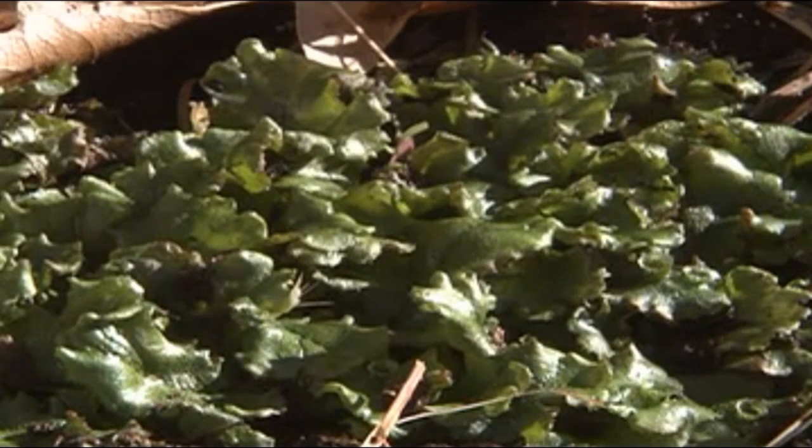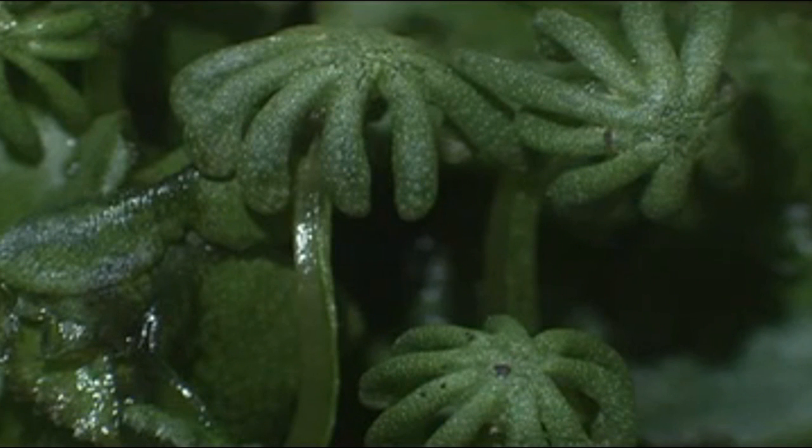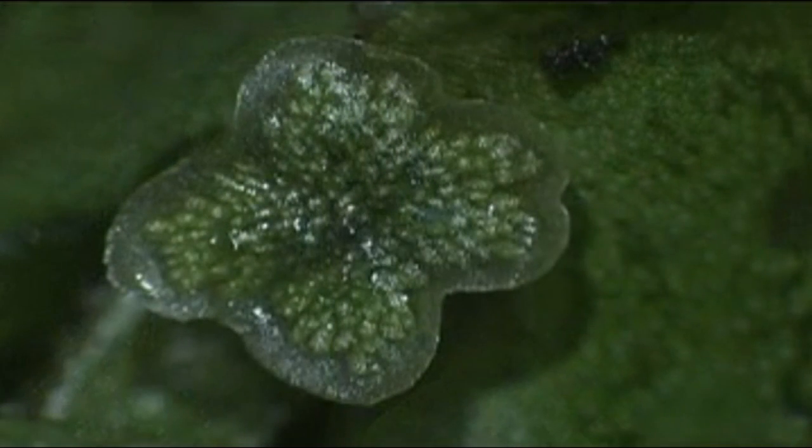In liverworts, the gametophyte generation often looks like a small green leaf attached to the ground, out of which rise structures that look like little green umbrellas. These are the archegonia and antheridium.